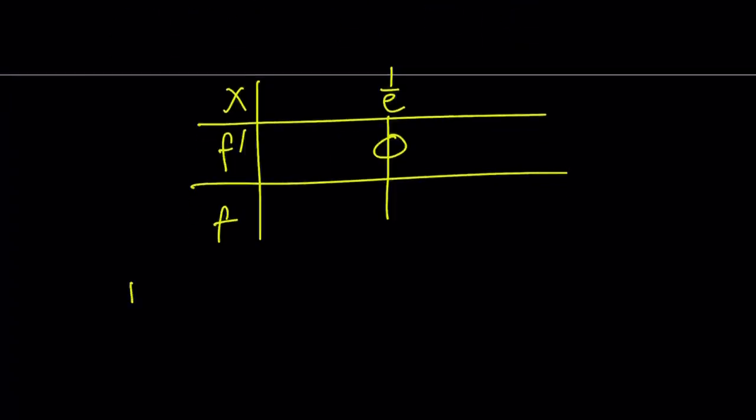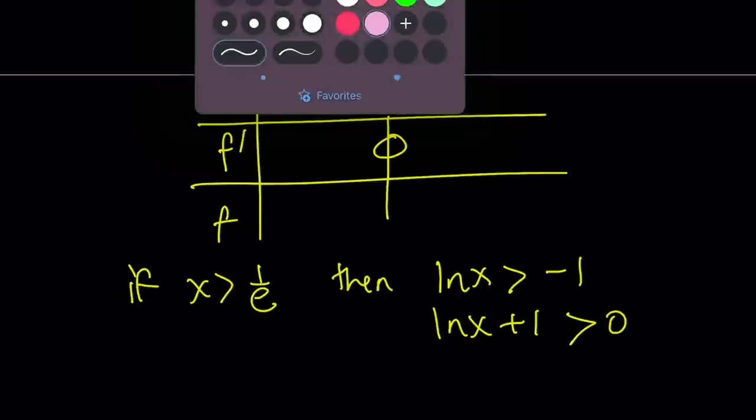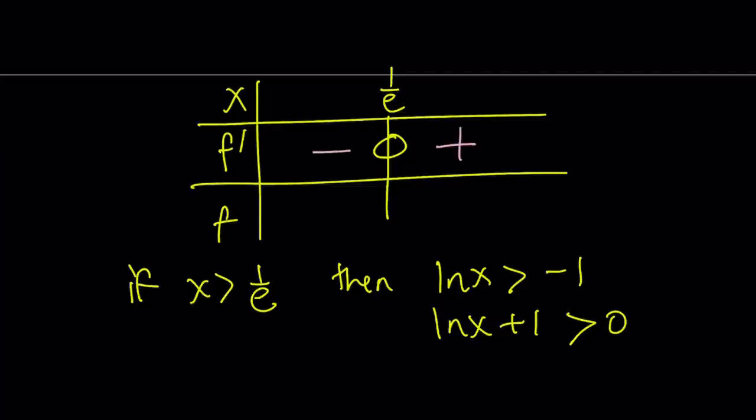Well, if x is greater than 1 over e, then ln x is going to be greater than negative 1. ln x plus 1 is going to be positive. So, this tells you that to the right of 1 over e, the derivative is going to be positive. Otherwise, it's negative.